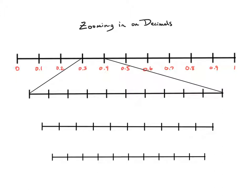On my next number line, I'm now beginning at three tenths and ending at four tenths. I need to figure out what we're counting by and what all of these individual markings represent. The easiest way is to make an equivalent decimal: instead of three tenths, I'll say thirty hundredths, and forty hundredths. Now it looks like I'm counting by one hundredth each time, just like I was counting by one tenth before. So this would be thirty five hundredths, thirty six hundredths, and so on.